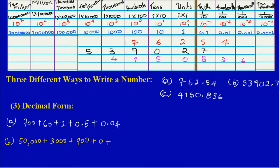In my units column I have a 2, so 2 times 1 gives me 2. Then crossing the decimal point, I have a 7 in my tenths column, so 7 times 0.1 gives me 0.7. And that's it for Part B.